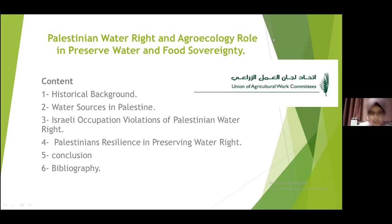My name is Reynad Munasra. I am a part of the Union of Agricultural Work Committee, which is a Palestinian non-governmental agriculture organization. The Union of Agricultural Work Committee is representative of the La Via Campesina Movement in the Arab region and North Africa. UAWC is cooperating with Palestinian citizens to help and support them in cultivating their land.